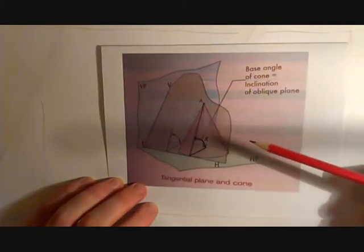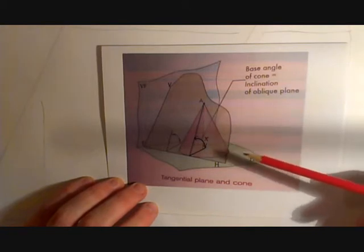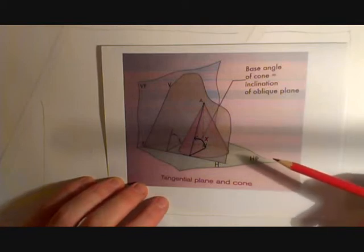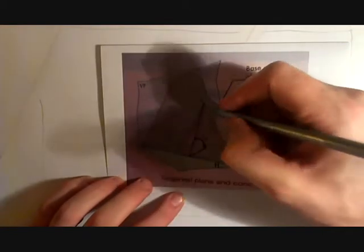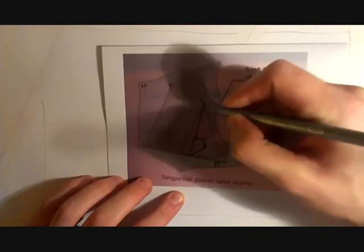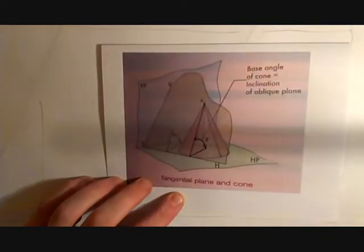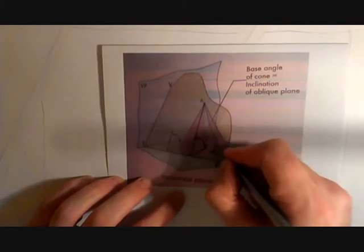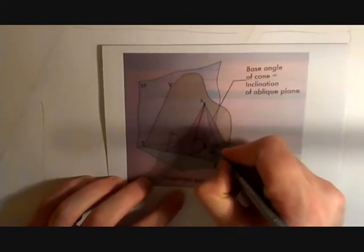From the cone principle, we know that this angle is the same as any other generator line around the cone. For instance, if we draw a generator line here from the apex to the base, the angle formed is also x.